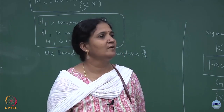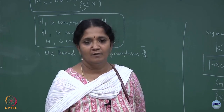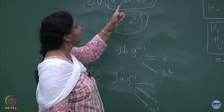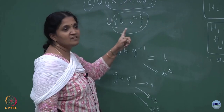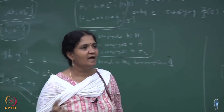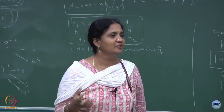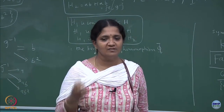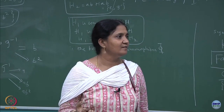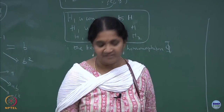What do we want to understand about the group structure? We want to also see conjugacy classes and the number of elements in each conjugacy class. Just like there are 3 conjugacy classes — one with 3 elements, one with 2 elements — we want to see whether we can get a nice handle on the combinatorics of permutations to understand how many conjugacy classes there are and how many elements are in each.